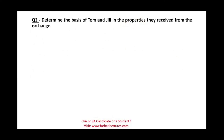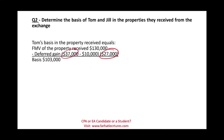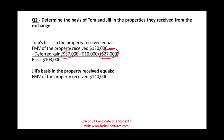Tom's basis equals the fair value of the property received — $130,000 — minus the deferred gain of $27,000, giving a basis of $103,000. Jill's basis is the fair market value of the property received — $140,000 — minus the deferred gain of $39,000 (none of her gain was taxable), giving Jill a basis of $101,000.